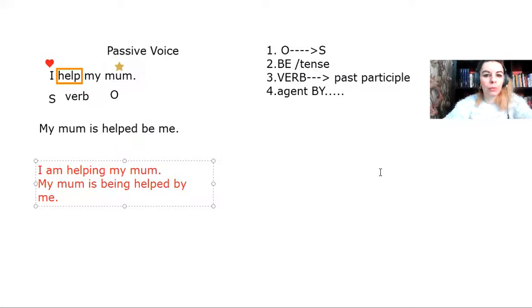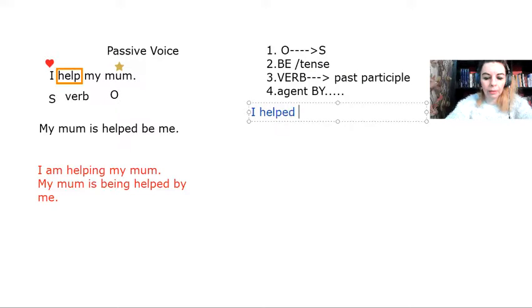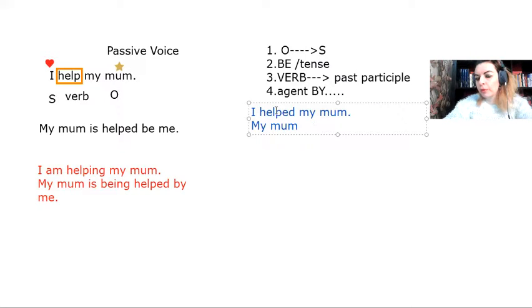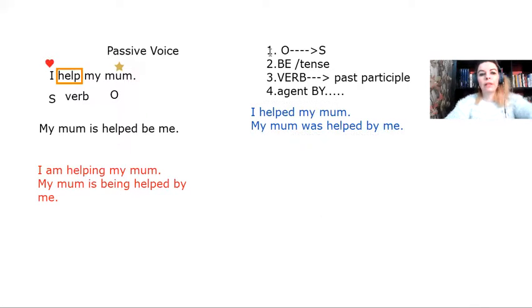Now, imagine that we had the same sentence in the simple past. I helped my mom. My mom. Now, the simple past of the verb be is was. My mom was the past participle of the verb helped by me.